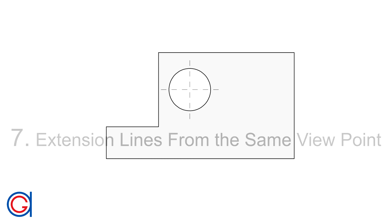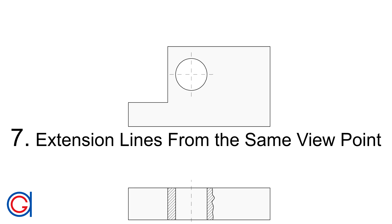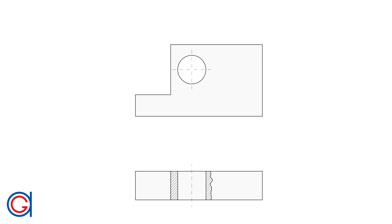Rule 7: You can only use extension lines from the same viewpoint — either plan view, elevation view, or side view. But you can never mix.